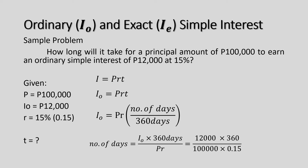Substituting the values: I_O is P12,000 times 360 days, all divided by the principal P100,000 times 0.15. The number of days equals 288 days. This means it will take 288 days for P100,000 to earn an ordinary simple interest of P12,000 at a rate of 15%.